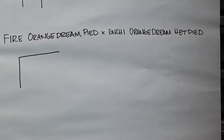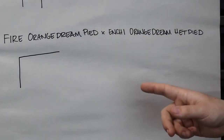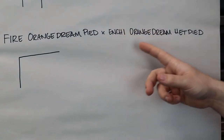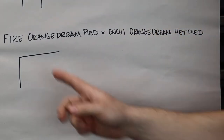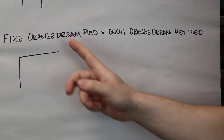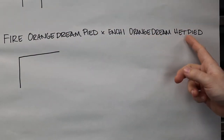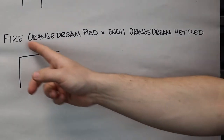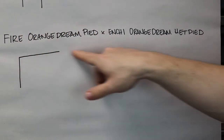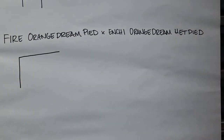We're going to do another one, more complicated now: fire orange dream pied by an enchi orange dream het pied. So we have codom, codom, recessive, codom, codom, recessive — but het for recessive. Our fire orange dream pied we're going to put up top, and our enchi orange dream het pied we're going to put down the side. Just start one gene at a time.